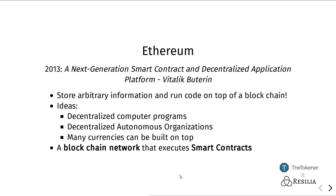He also realized that you could create value representations of many different kinds, and in this way transfer value or ownership of all kinds of things on the system without any centralized oversight. This system is known as a blockchain network that executes smart contracts — that is what Ethereum at its core is. What exactly do these two terms mean? That is what I'm now going to explain next.